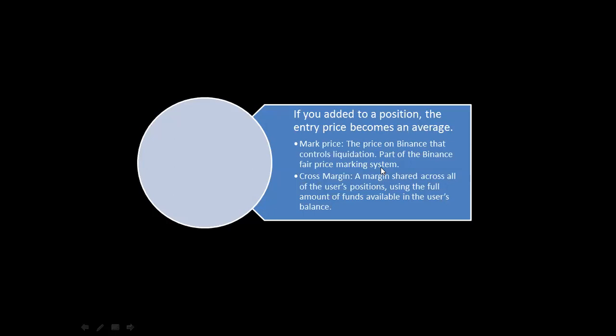The mark price is not arbitrary — it is calculated by aggregating the price of the commodity as traded across other exchanges. For example, if ZIL is trading at seven dollars on Huobi, seven dollars twenty cents on KuCoin, and seven dollars fifteen cents on OKX, Binance aggregates all those prices, divides them, and uses the average as the mark price of ZIL on Binance Futures.